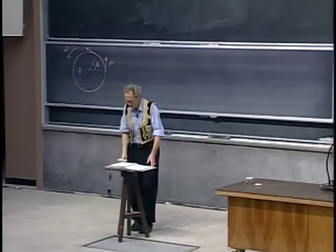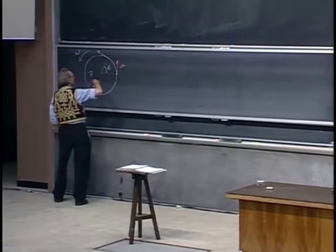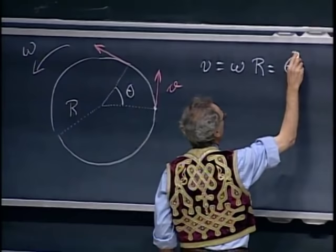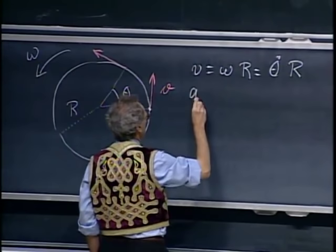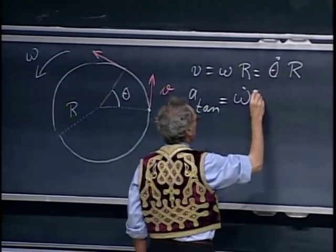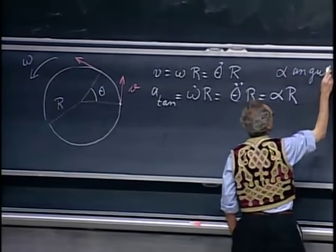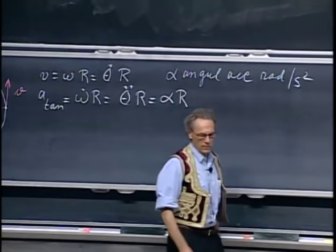We may now do something we haven't done before. We could give this object in this circle an acceleration, so we don't have to keep the speed constant. v equals omega r, which equals theta-dot times r. Taking the first derivative gives a tangential acceleration, which is omega-dot times r, which is theta-double-dot times r. We call theta-double-dot alpha, and alpha is the angular acceleration, in radians per second squared.